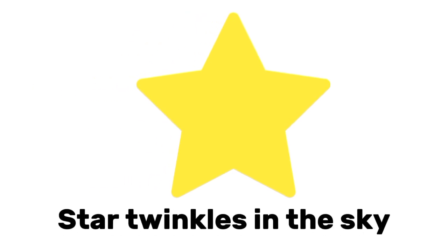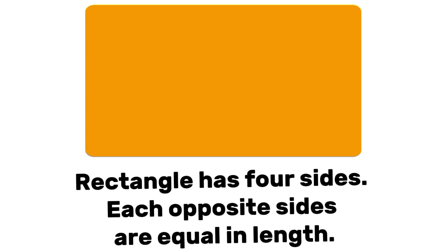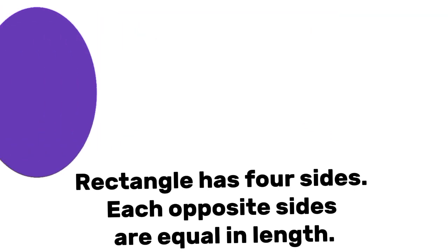Star. Star twinkles in the sky. Heart shape. Rectangle. Rectangle has four sides. Each opposite sides are equal in length. Oval. Oval has shape like an egg.